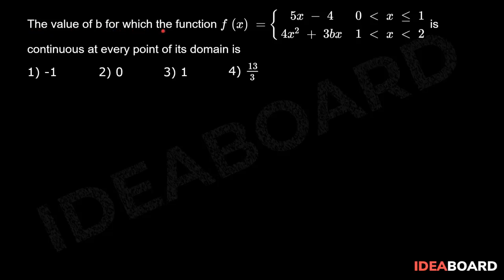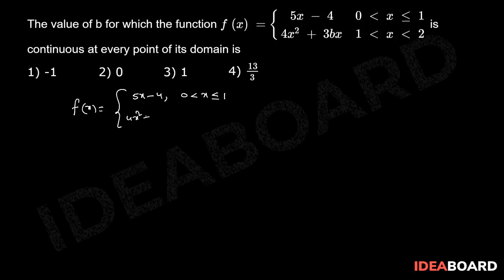The value of b for which the function f(x) = 5x - 4, for 0 < x ≤ 1, and 4x² + 3bx, for 1 < x < 2, is continuous at every point of its domain. The given function f(x) = 5x - 4 for 0 < x ≤ 1, and 4x² + 3bx for 1 < x < 2.